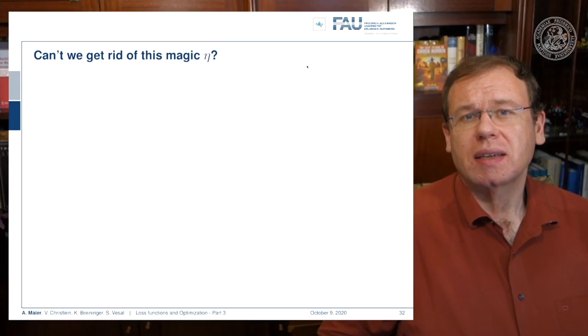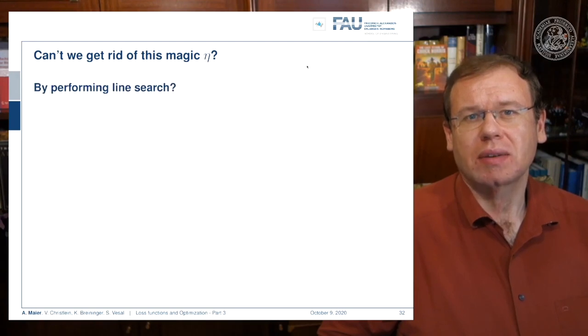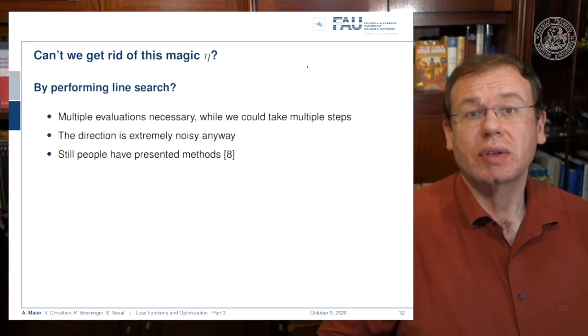Now you may ask, can't we get rid of this magic eta? What is typically done—quite a few people suggest doing a line search in similar cases. Line search needs you to estimate the optimal eta at every step, so you need multiple evaluations in order to find the correct eta in the direction that the gradient points. It is extremely noisy anyway, so people have presented methods but they are not the state of the art right now in deep learning.